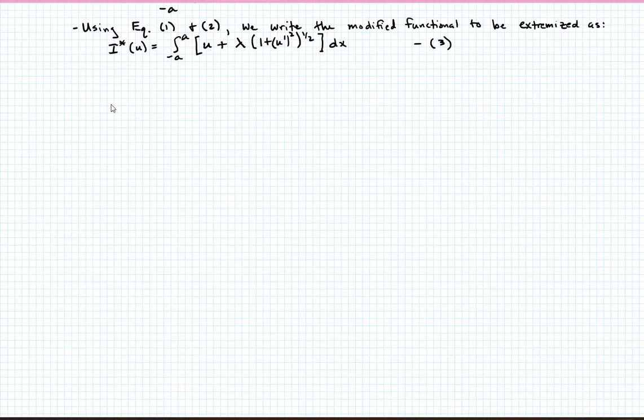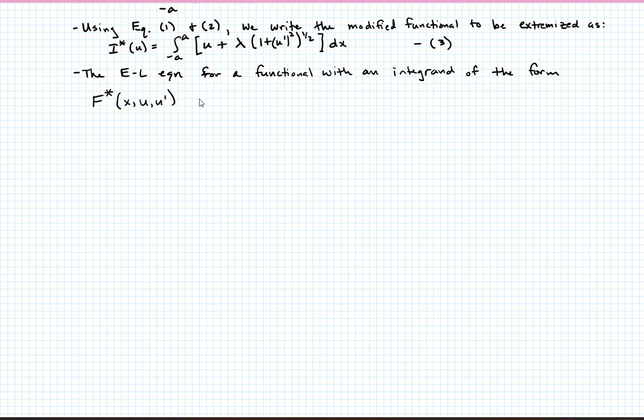So what we observe now is we look at equation 3 and we see that that's just a functional of the form f star, where the integrand is f star of x, u, and u prime. And we know the Euler-Lagrange equation for that. We've already derived it. So the Euler-Lagrange equation for an integrand of the form f star of x, u, and u prime, is given by partial f star with respect to u, minus d by dx, partial f star with respect to u prime. That's going to be equal to 0. That's the Euler-Lagrange equation. We'll call this equation 4.